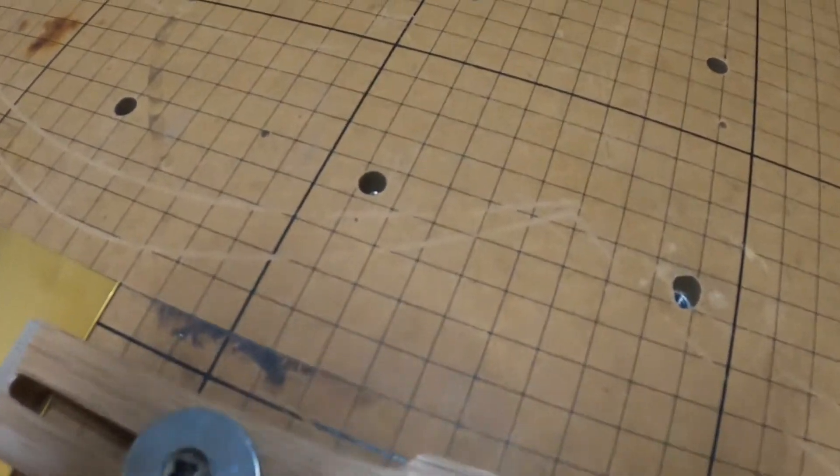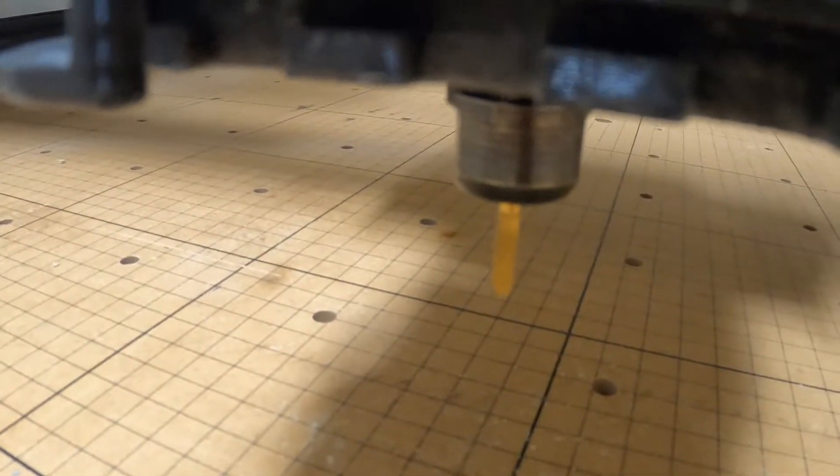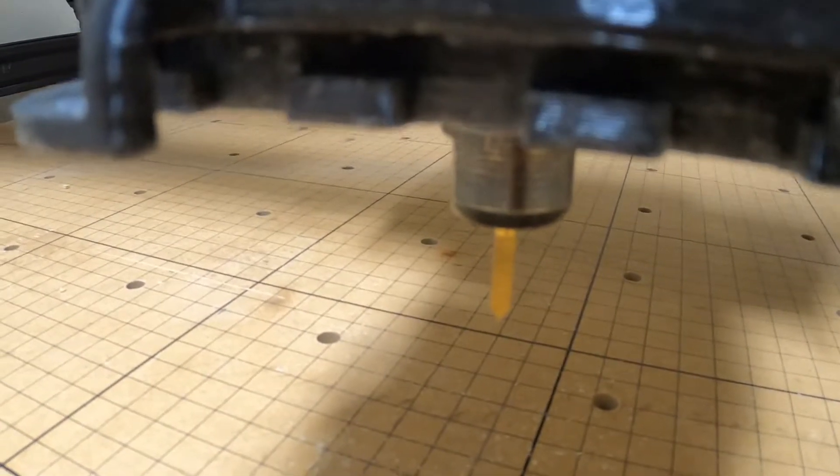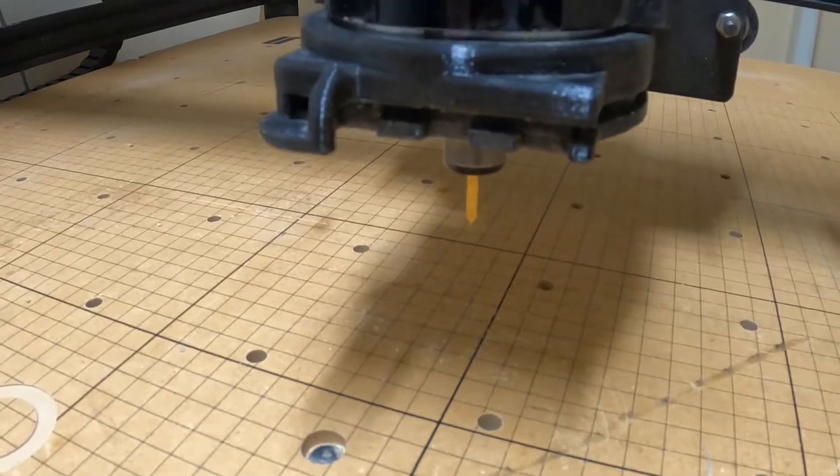I'm going to start out and see what we can do with a 60-degree V-bit which we've already installed in the router. This is completely an experiment, but we're going to go back and set it up and give it a try.